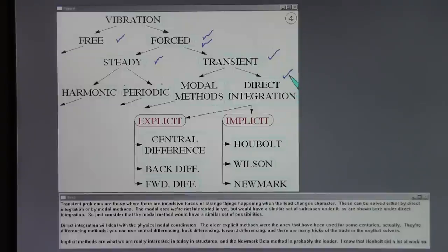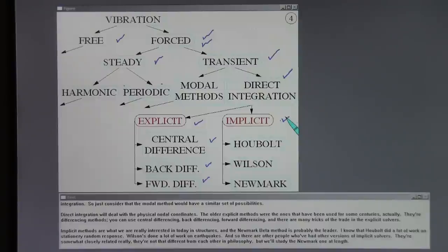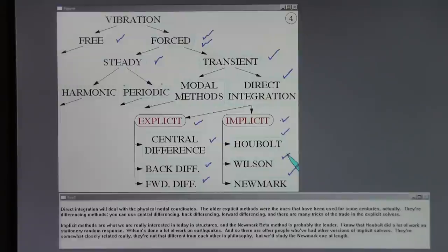Transient problems are those where there are impulsive forces or strange things happening where the load changes character. These can be solved either by direct integration or by modal methods. Direct integration will deal with the physical nodal coordinates. The older explicit methods have been used for some centuries actually. They're differencing methods - you can use central differencing, back differencing, forward differencing, and there are many tricks of the trade in the explicit solvers. The implicit methods are what we're really interested in today in structures. And the Newmark Beta method is probably the leader.